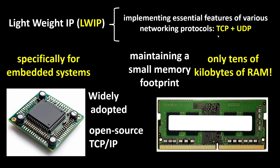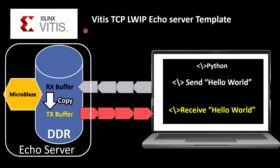The question is how we should write the whole TCP protocol — that is certainly a difficult job. The answer is that we are going to use the lightweight IP, lwIP, which implements essential features of various networking protocols like TCP and UDP. It is widely adopted, open source, and designed for embedded systems. It needs only tens of kilobytes of RAM, making it suitable for embedded ARM cores or for the MicroBlaze.